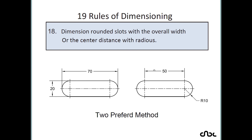Rule number 18: dimension rounded slots with overall width, or with center distance and radius. These are the two accepted methods — either give the overall size of the slot, or specify the center-to-center distance along with the radius.